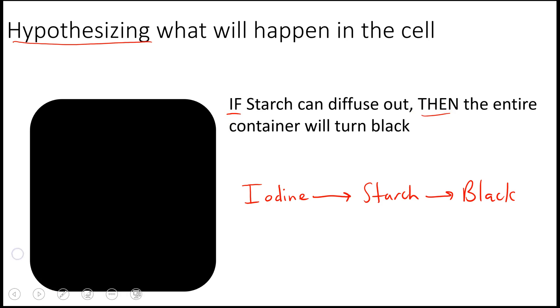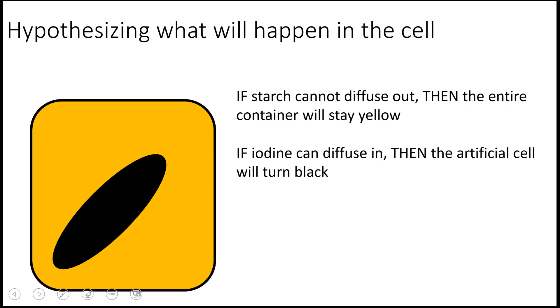Hypotheses don't necessarily have to be true. So in the second situation, if starch could in fact not get out of the artificial cell and stayed in that artificial cell, what could happen? An alternative hypothesis would be that the iodine from outside would diffuse into the cell and turn the artificial cell entirely black. And in fact, this is what happens. The iodine does diffuse into the artificial cell, interacting with the starch, and it'll turn the artificial cell black. That's a color-changing way to approach this experiment, one that we did in class.